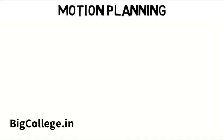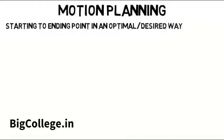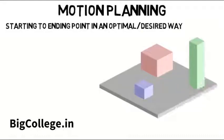Then motion planning is obviously about moving a robot from a starting to ending point in some optimal or desired way. You might have some configuration space with obstacles, and the robot has to determine an optimum way to get from one point to another, and there are many ways to do this.